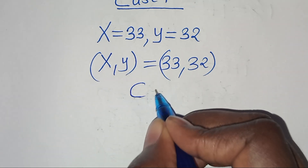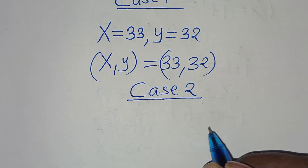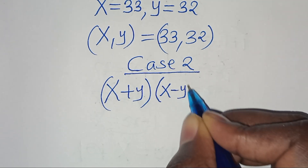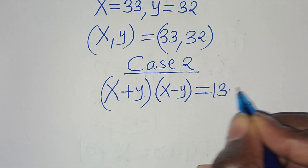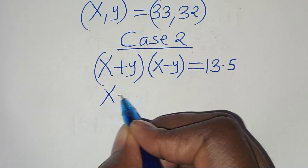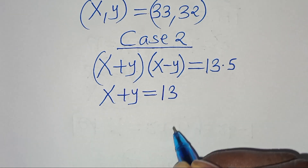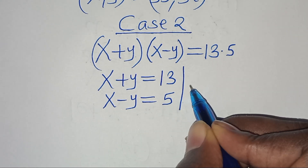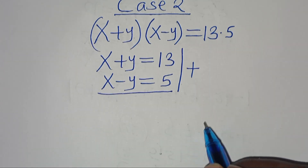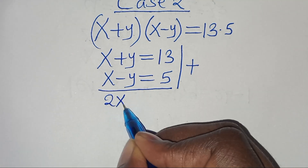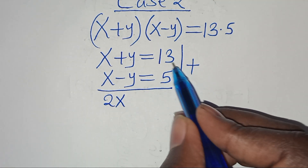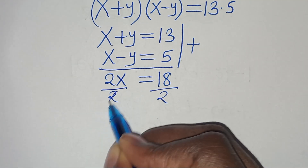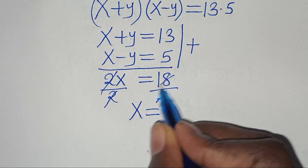Let's proceed to case 2. In case 2, we have (x + y) multiplied by (x - y) equals 13 times 5, so x plus y equals 13 and x minus y equals 5. Adding these two equations: 2x equals 13 plus 5, which is 18. Dividing both sides by 2, x equals 18 divided by 2, which equals 9.